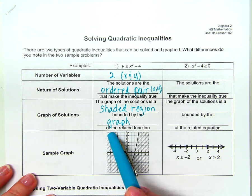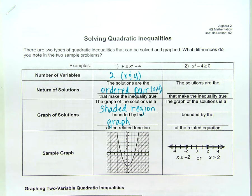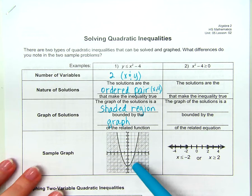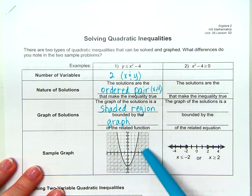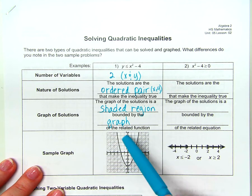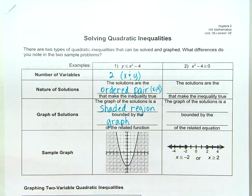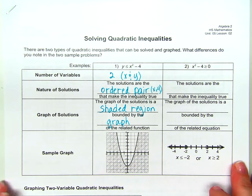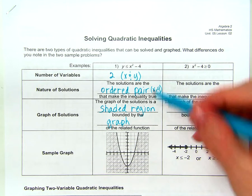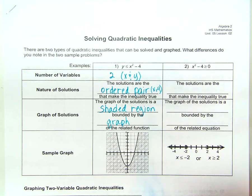We're going to be graphing a parabola like we've been doing, and we're either going to shade outside of the parabola like this one, or we will shade inside of the parabola depending on the sign — depending on what makes the value of the inequality true or not. We always want to shade where it's true.